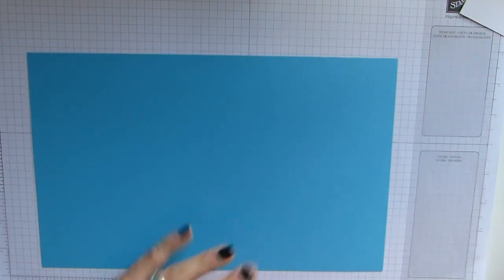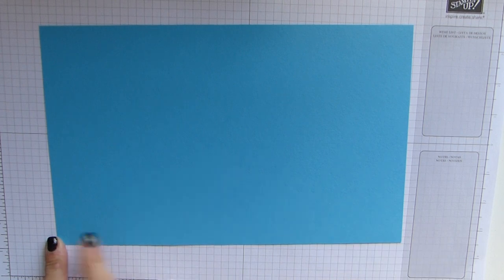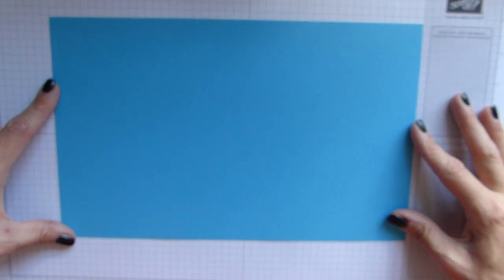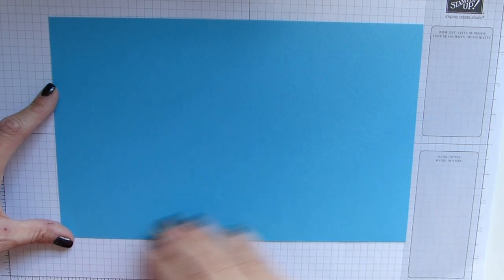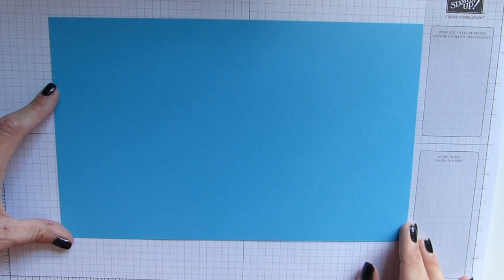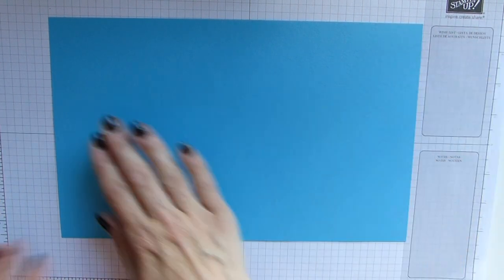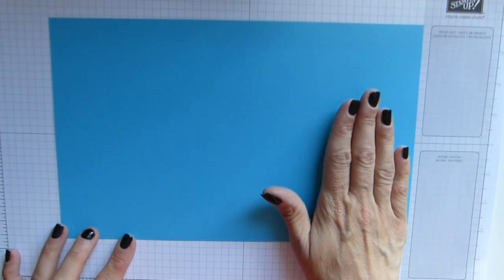You need some cardstock that measures eleven and three quarters by seven and a quarter. This is actually just a full length of an A4 sheet, so it's literally an A4 sheet by seven and a quarter. Before I do any of my scoring, we obviously need to do our stamping.